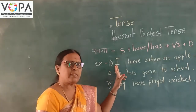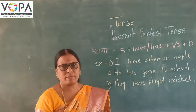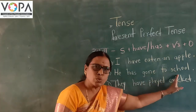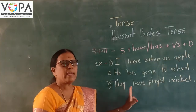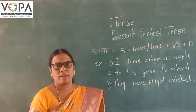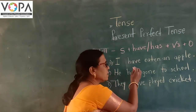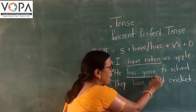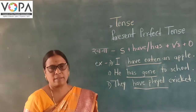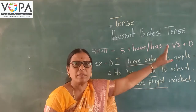Examples: I have eaten an apple. He has gone to school. They have played cricket. Look at the structure — have eaten, has gone, have played. Have or has plus V3.